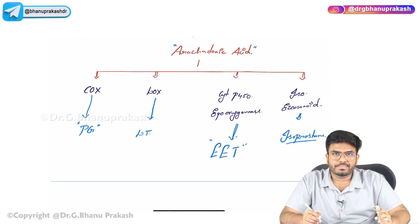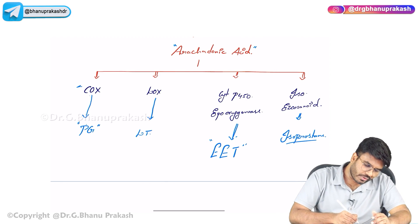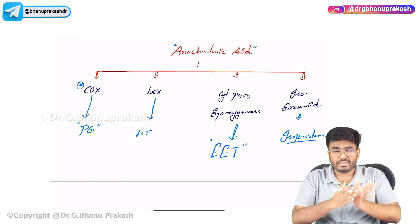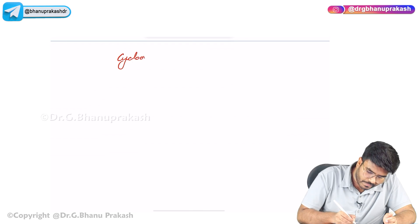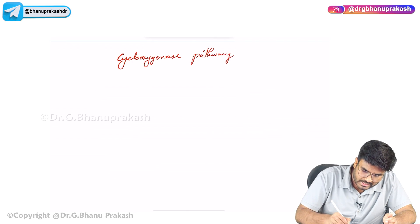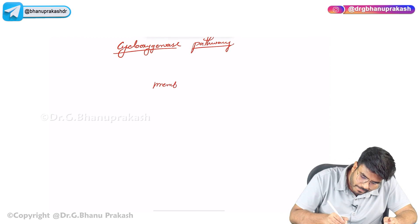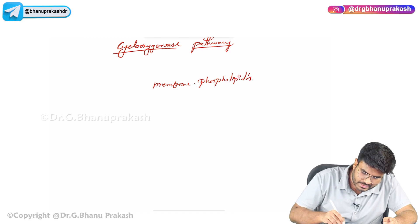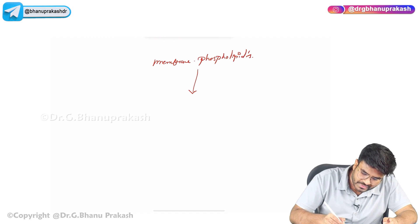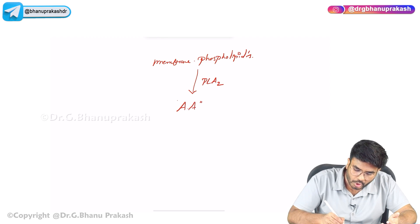For your exam, you need to know the first and second pathways in detail. Let's begin with the cyclooxygenase pathway. In this pathway, membrane phospholipids are going to break down with the help of phospholipase A2 or phospholipase C into arachidonic acid.